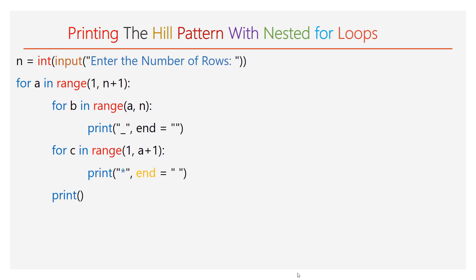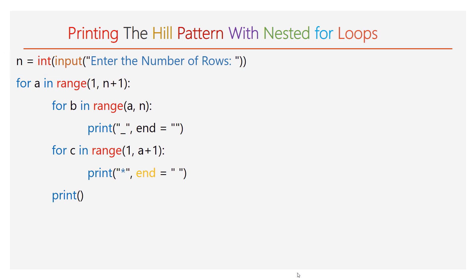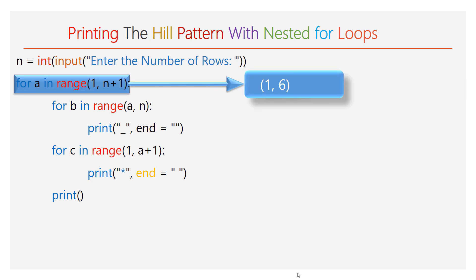We will try to analyze how the given code will print the hill pattern. First, collect the number of rows to be printed from the user and convert that into an integer using the int function. Let me consider the value of n as 5, so I want to print 5 rows.